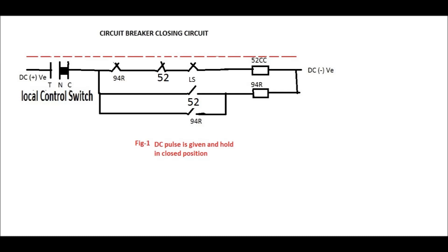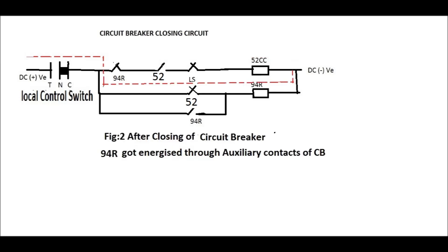When a DC pulse is given from the control switch and we hold the control switch in the close position — that is, a continuous DC pulse is given from the TNC switch — the closing coil 52CC will energize through the NC contact of 94R, the NC contact of 52, and the limit switch contact. Whenever it energizes, it will operate the circuit breaker to make it ON. When the circuit breaker is in the ON condition, the auxiliary contacts of the breaker change their positions, and the DC pulse will bypass through the NC contact of the breaker, which was previously in the NO position, thereby energizing the 94R relay.